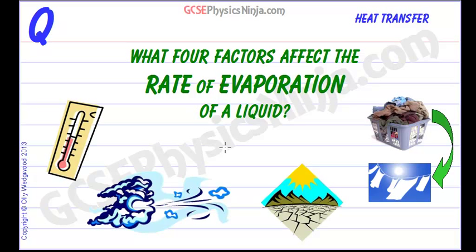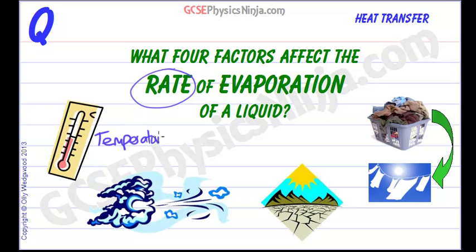We now know that evaporation is when a liquid particle gets enough kinetic energy to escape as a gas, and that leads to cooling of the liquid particles that it leaves behind. So what factors affect the rate of evaporation? How can we speed up evaporation of a liquid? Well, the first thing is the temperature of the liquid is important.